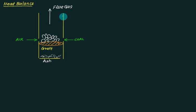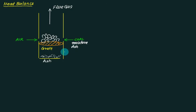Considering a boiler model, we have a grate area where coal is fired from one side and air is fired from the other side. The coal supplied may contain moisture and ash. Ash will not participate in combustion, and neither will moisture.